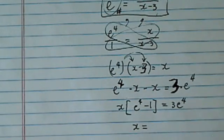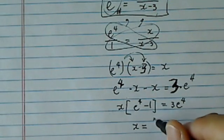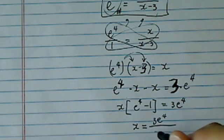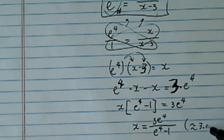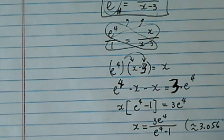One more step, dividing, and we're almost there. 3 e to the 4 over e to the 4 minus 1. And if you plug into the calculator, this is roughly equal to 3.56 or so.